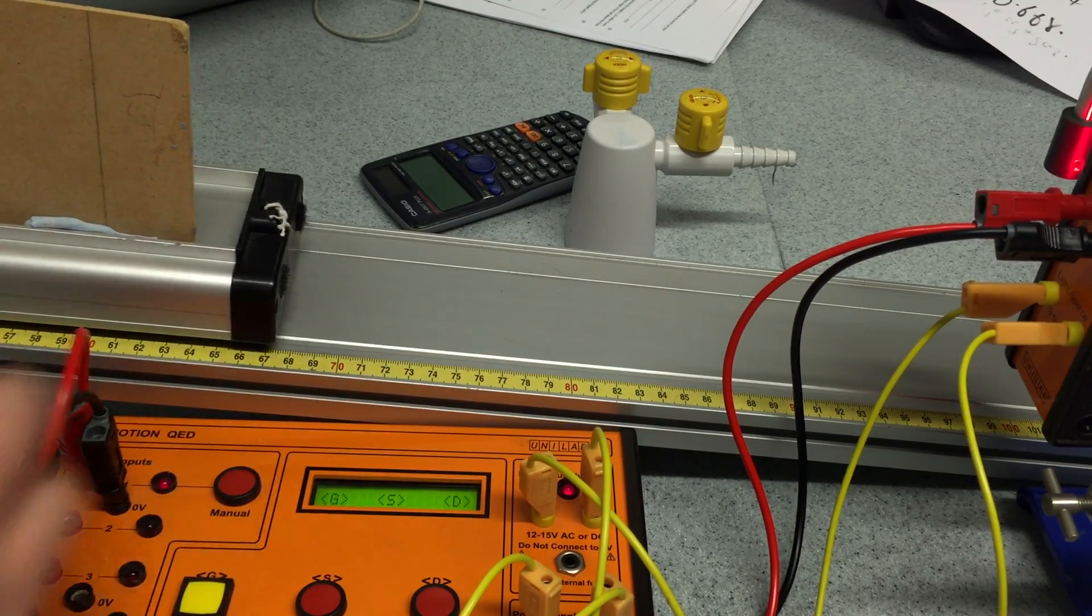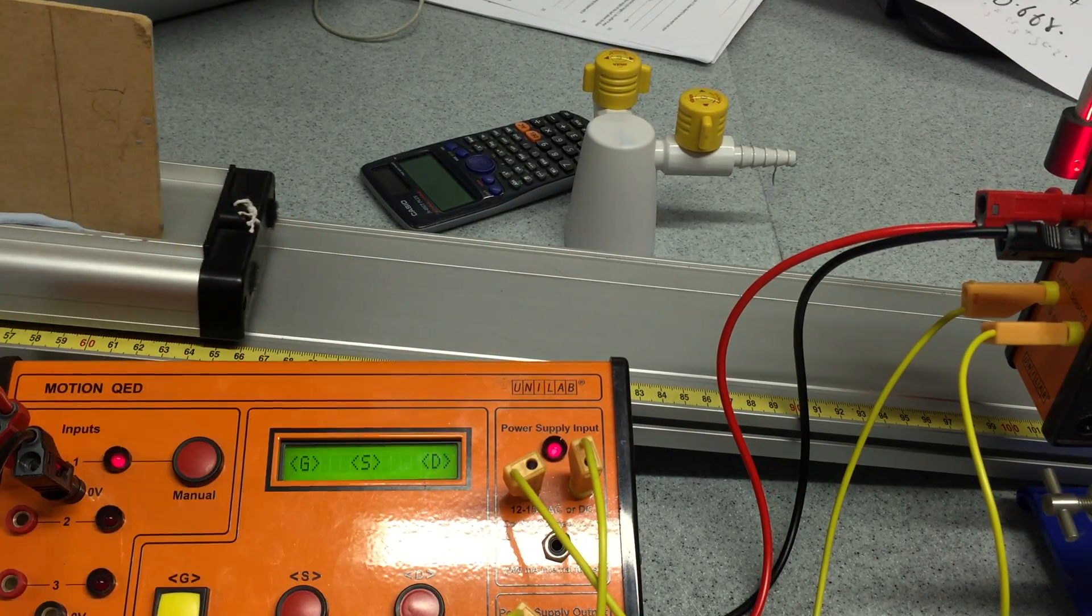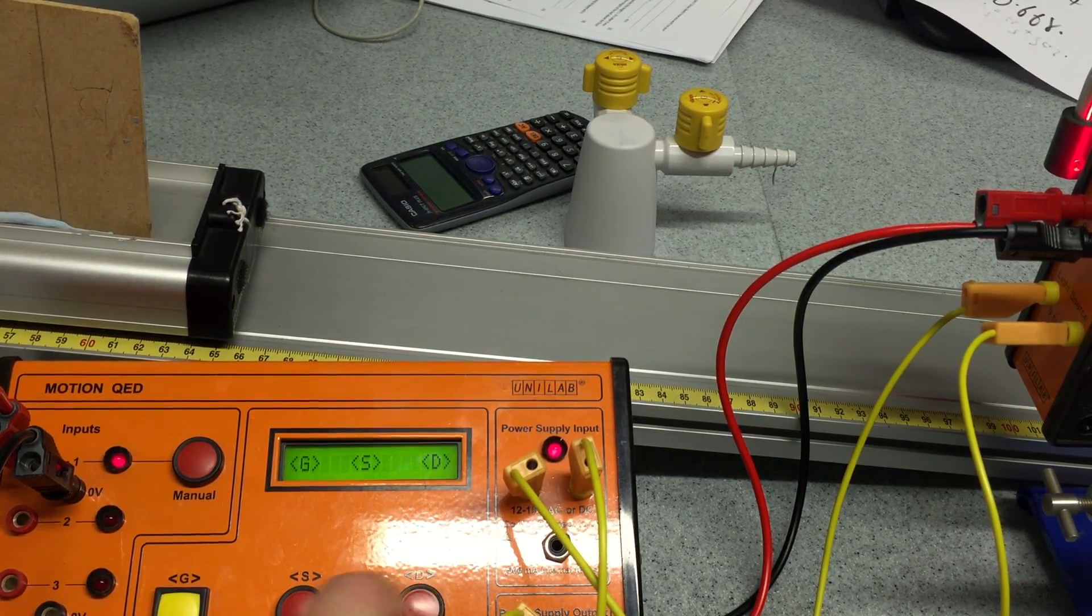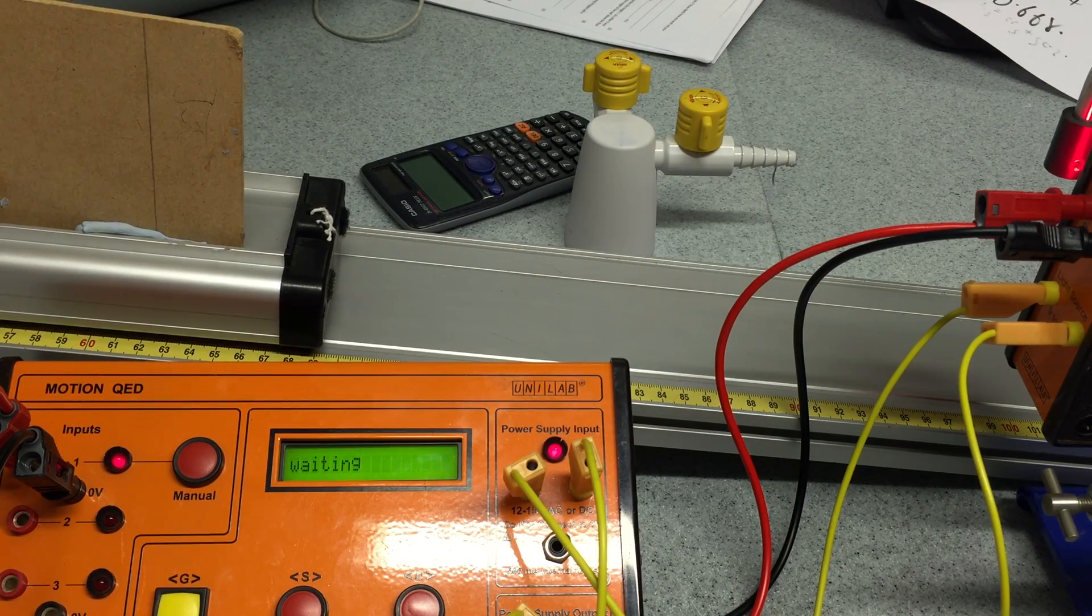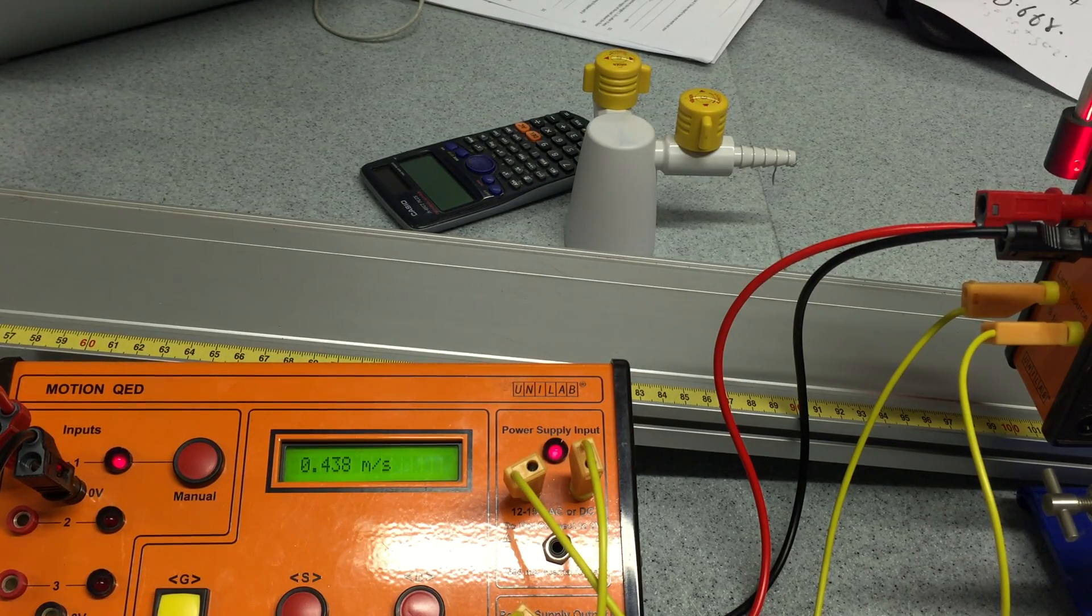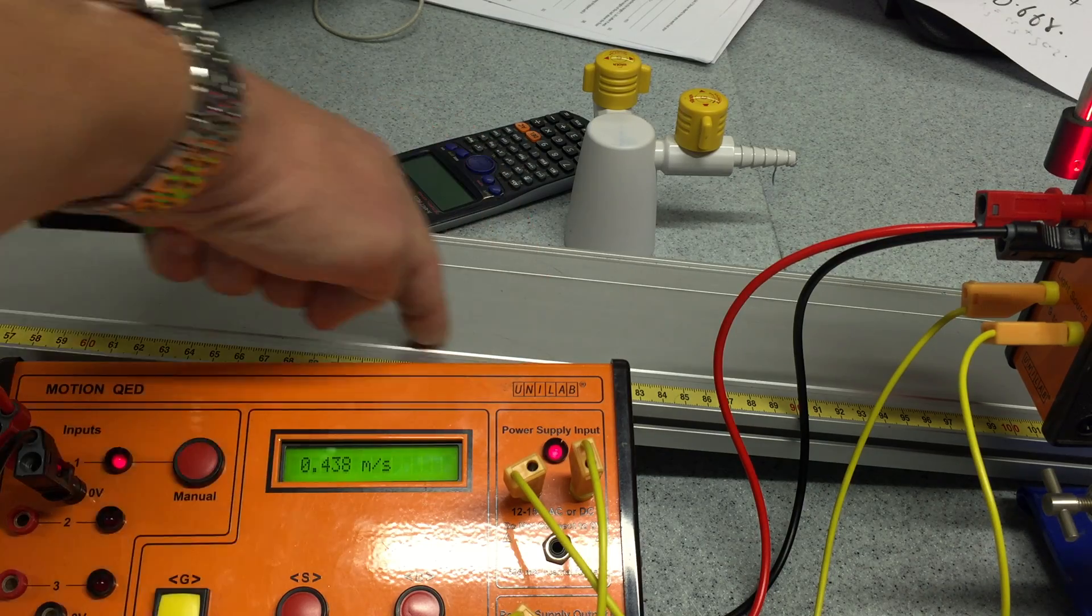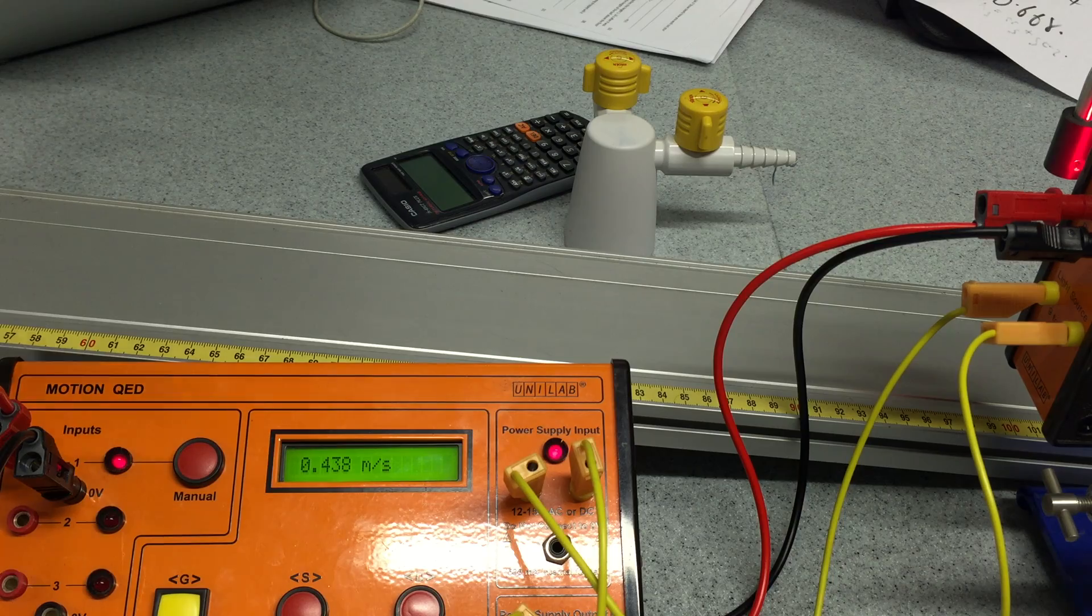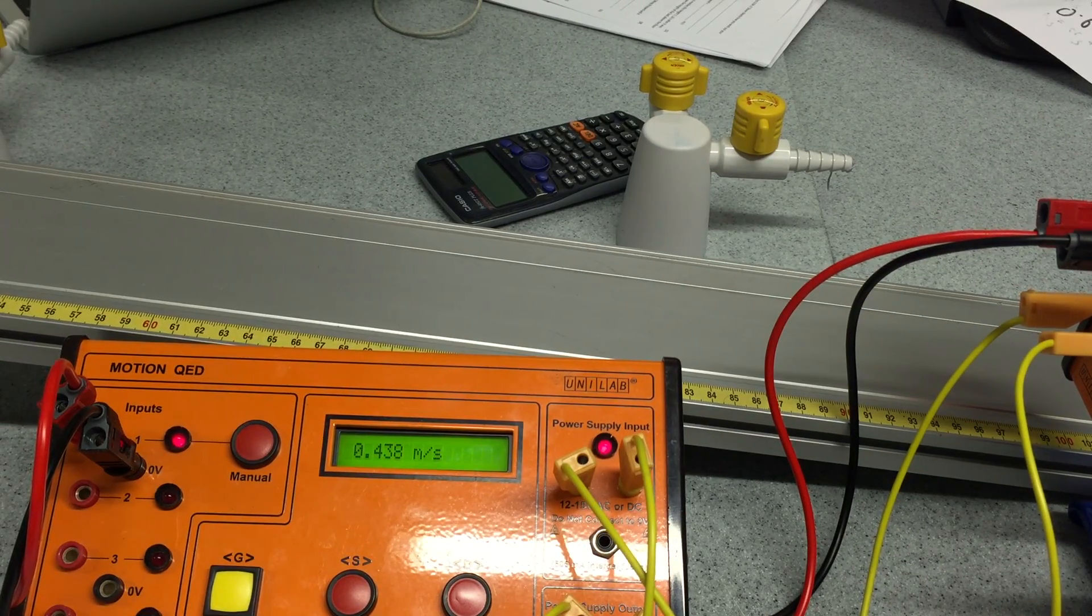So once again, I'm sure I've shown you how I set up these motion sensor devices before, but I'm ready to go. I've set it at 30 centimetres. I release, display, and it gives me a readout directly of the velocity. And I do that from many distances, repeat it three times, etc.